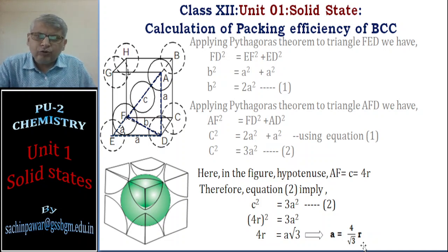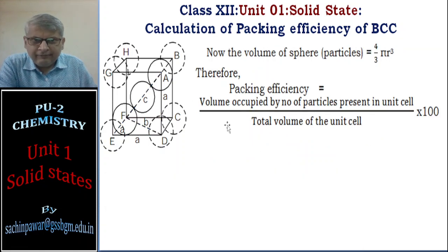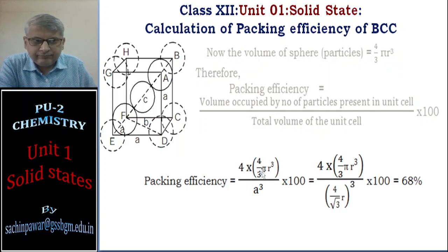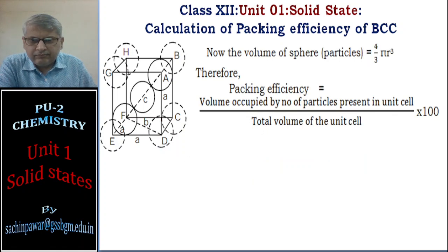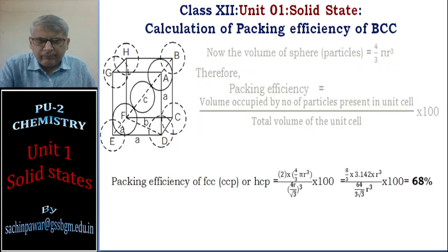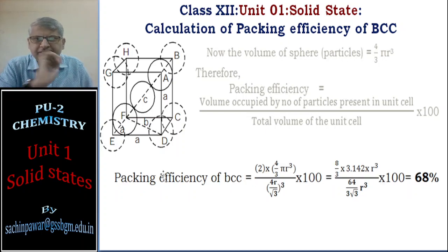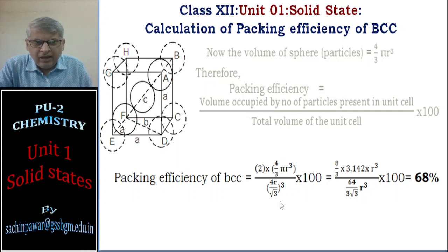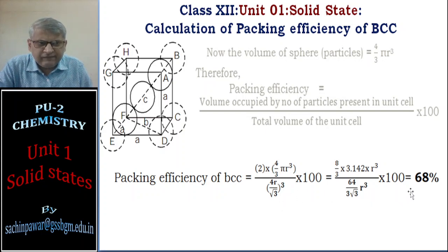Substituting into the packing efficiency formula: (2 × (4/3)πr³) / a³ × 100, with a = 4r/√3 substituted in the denominator. Simplifying gives 68%. So the packing efficiency of BCC is 68%.